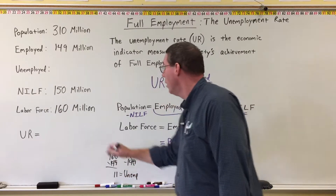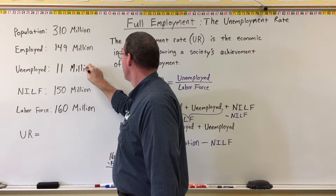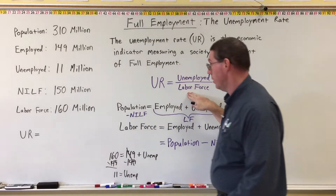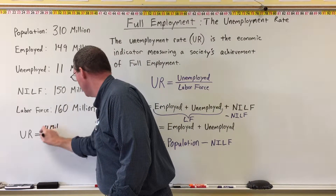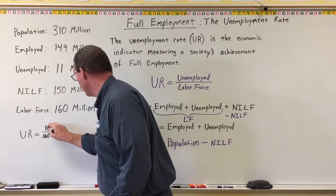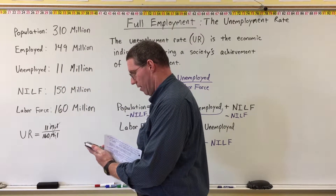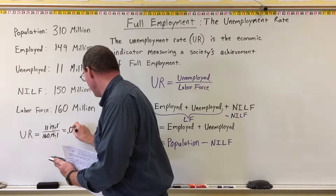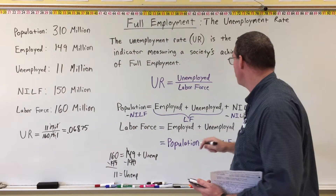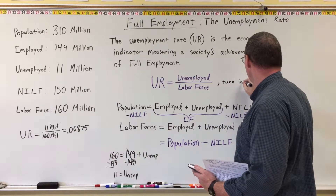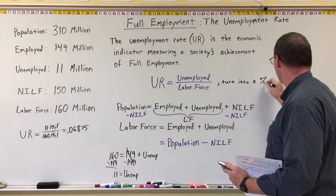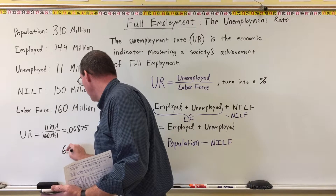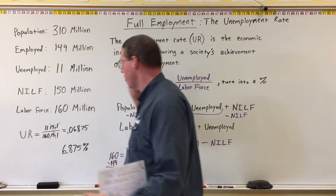So there are 11 million unemployed people in this economy. To get the unemployment rate, we divide 11 million by 160 million. Canceling the units, 11 divided by 160 gives us 0.06875. Turning that into a percentage by multiplying by 100, the unemployment rate is 6.875% in this economy.